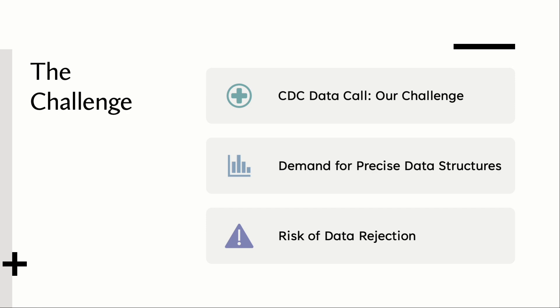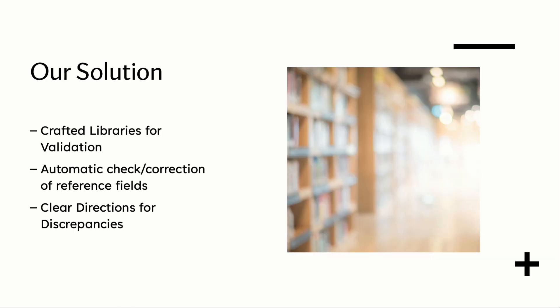Participating in the tracking data call for the first time presented its own set of challenges. Navigating the general process, understanding the data dictionaries, and adhering to the how-to guides were initial hurdles. Collaborating with various data providers to ensure data accuracy and format compatibility added another layer of complexity. However, the unwavering support from the tracking program and our data providers were invaluable in guiding us through these challenges. Despite the guidance, it was imperative to strictly adhere to the data structures outlined in the data dictionaries. Any deviation could lead to potential data rejection, emphasizing the critical nature of this step. To ensure our data set met the necessary criteria before submission, we crafted specialized validation libraries.